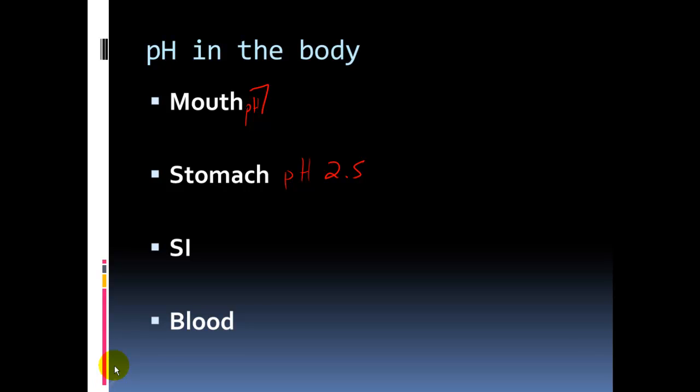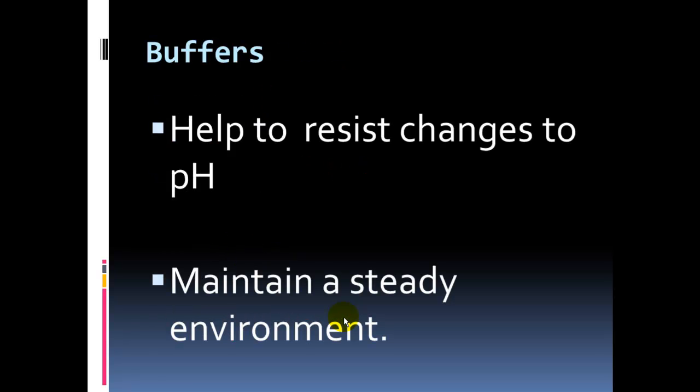Our small intestine is a basic environment, running around a pH of eight and a half. And our blood is somewhere in between 7.38 to 7.4. And this is quite a narrow range, moving anywhere too significant out of this range would be quite damaging and quite dangerous.